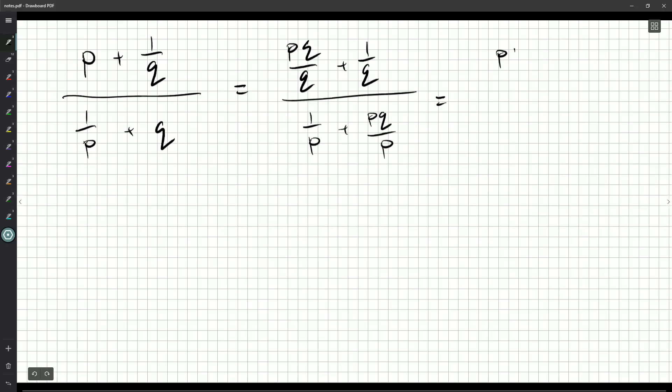Okay, so we can say pq plus 1 over q, and then 1 plus pq over p. We can invert and multiply, so we'll get pq plus 1 over q times p over pq plus 1. So really what we've got is p over q, and that's equal to 17.